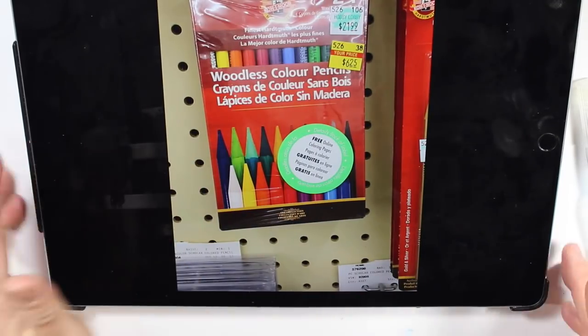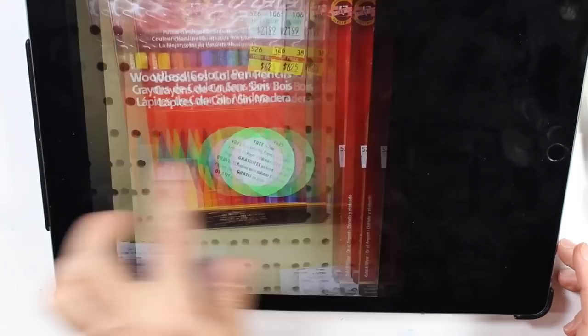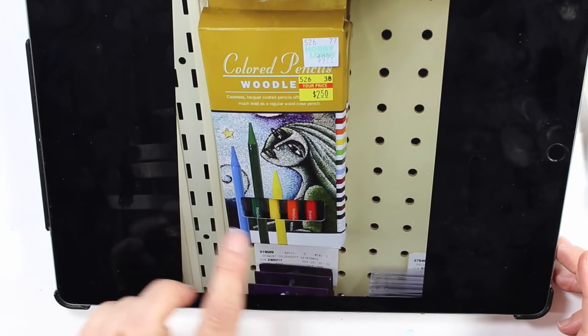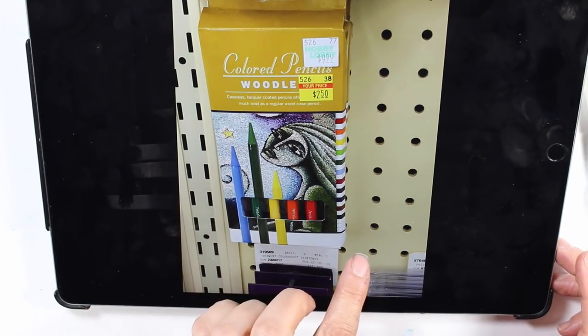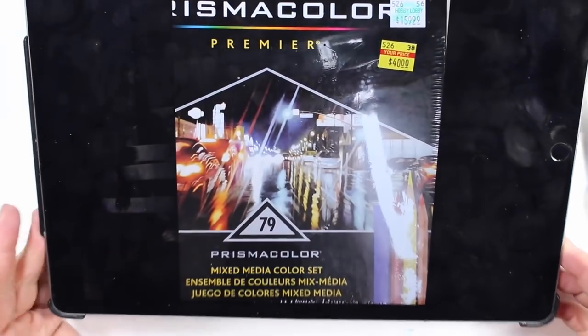These are the pencils I got for $6.25. I like those. Another woodless pencil. These were $2.50 for a 12-pack. Prismacolor. Lots of Prismacolor.